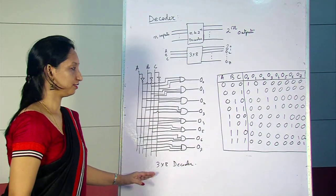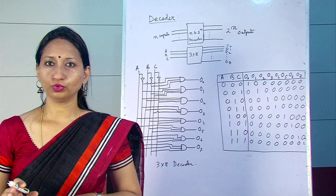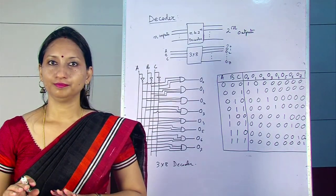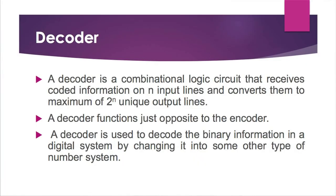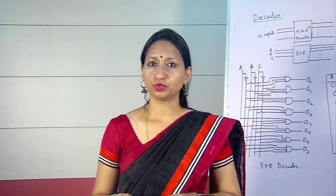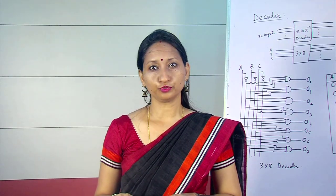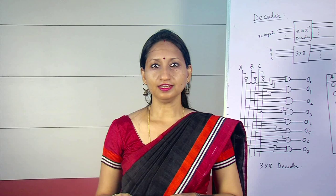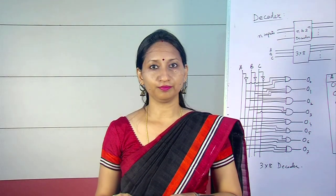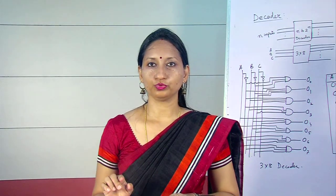The function of a decoder is opposite to an encoder. Decoder is used in code conversion circuits, for example BCD-to-7-segment decoder. A 3-to-8 line decoder circuit can be used in binary-to-octal conversion. A decoder can also be used to implement any combinational logic circuit.